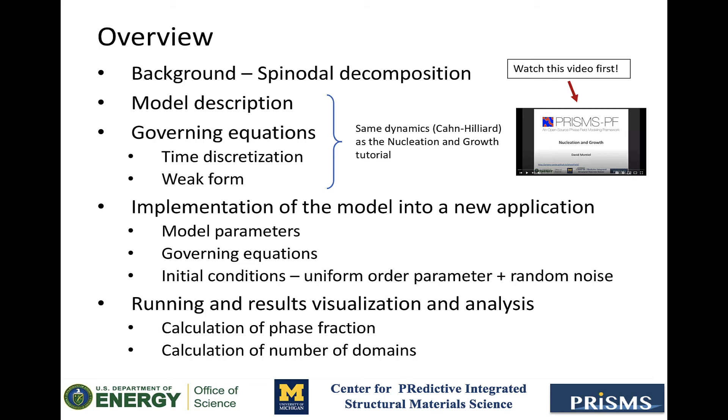These changes are mostly straightforward, with the exception of the initial conditions, which will require defining a random variable to simulate a small initial perturbation of the composition due to thermal noise. And finally, we will again use visit to see the results. And in addition, we will do some post-processing analysis of the output using the new post-processing scripts for Prism's PF.